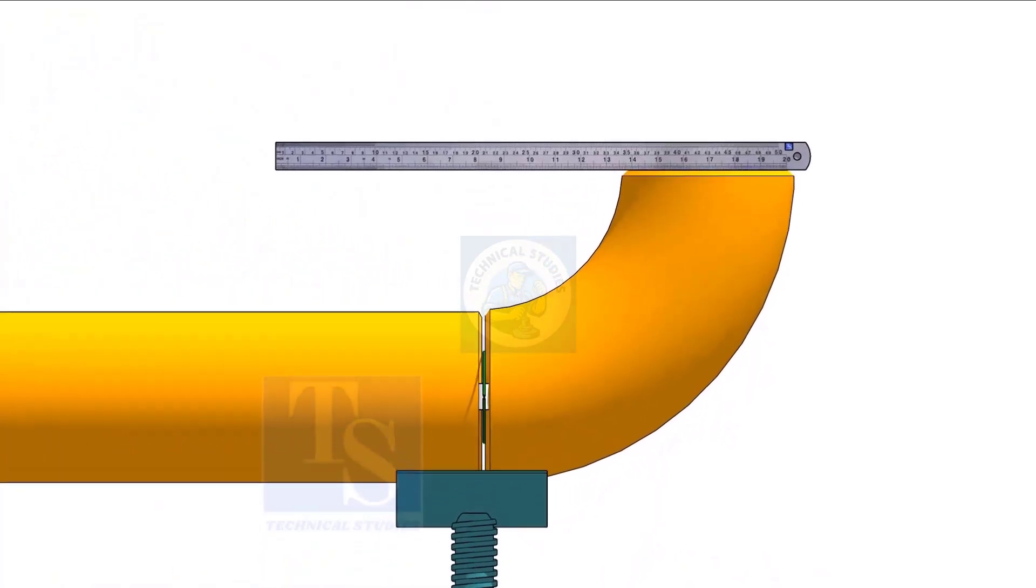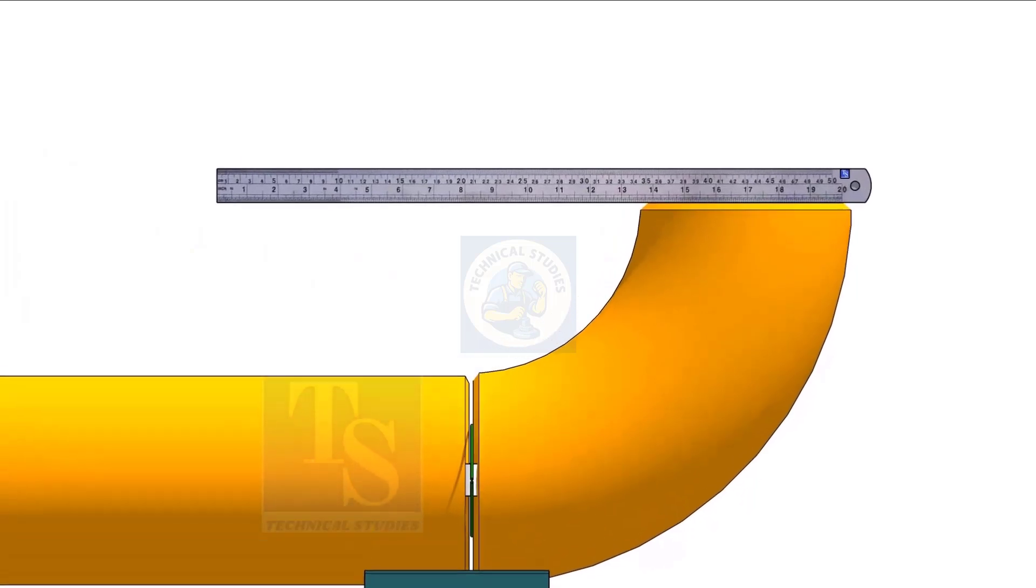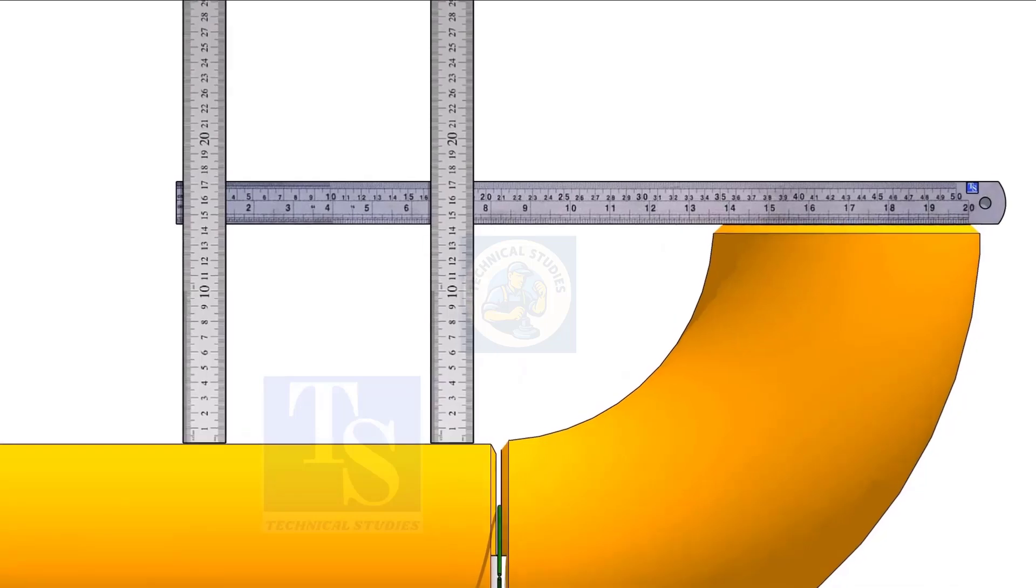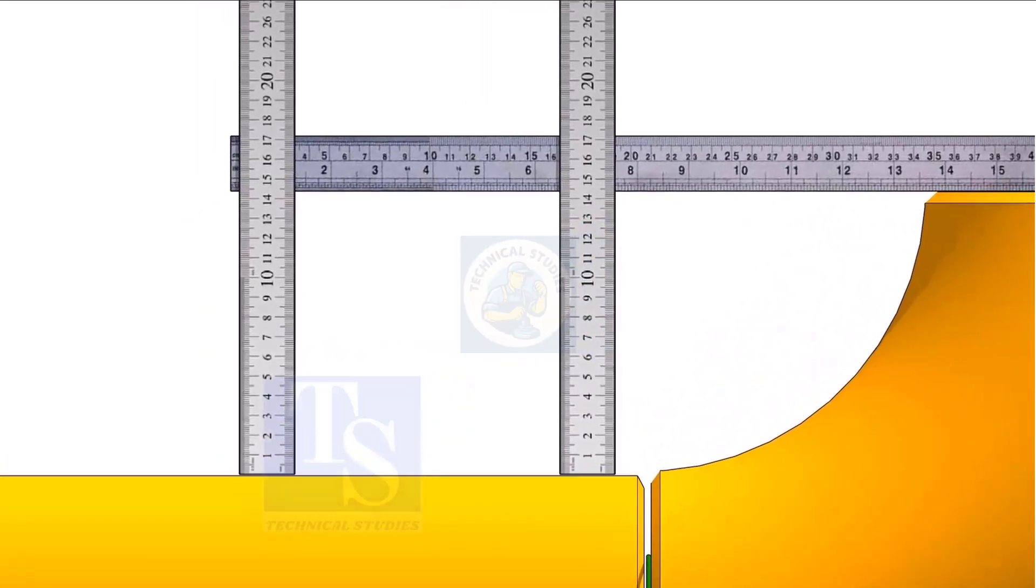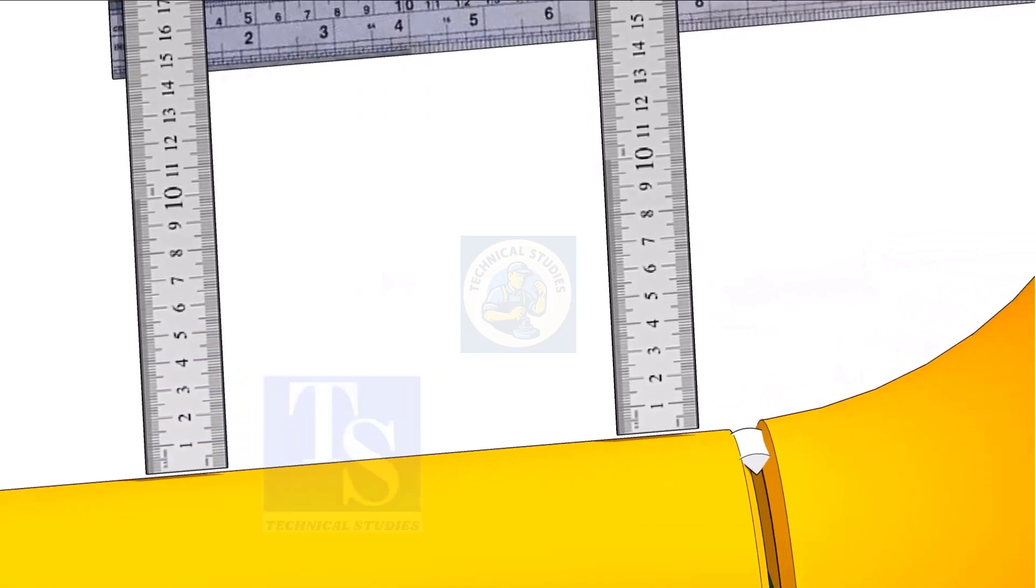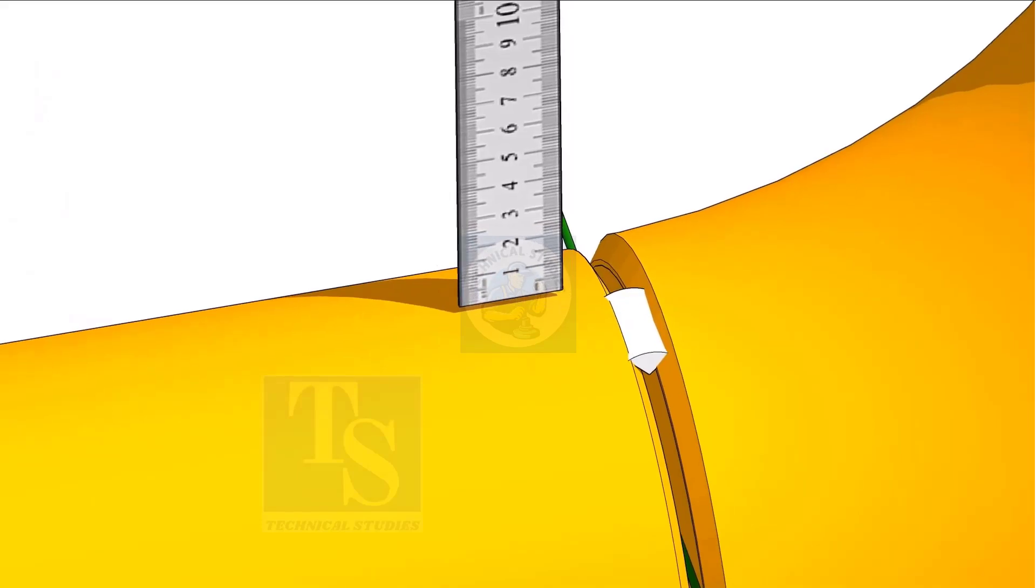Hold a scale on the top of the elbow and measure the distance. Tack weld on the top and bottom side of the joint.